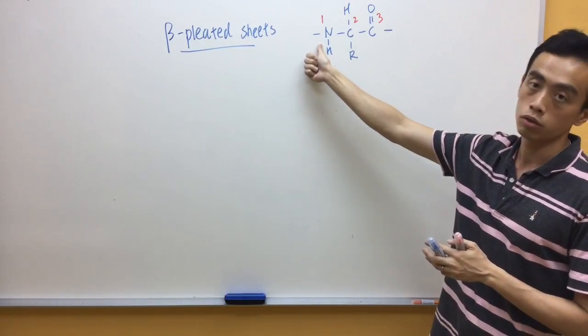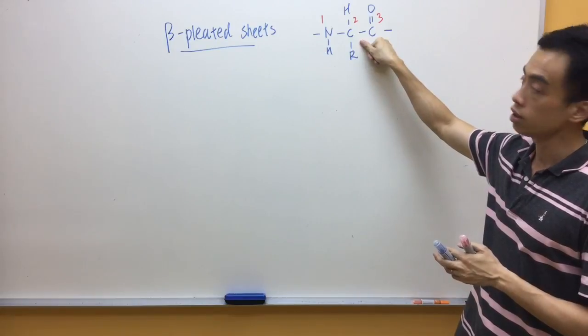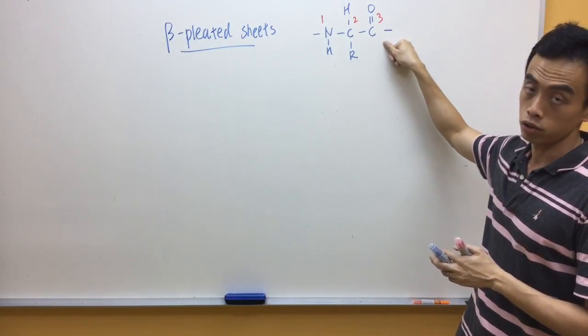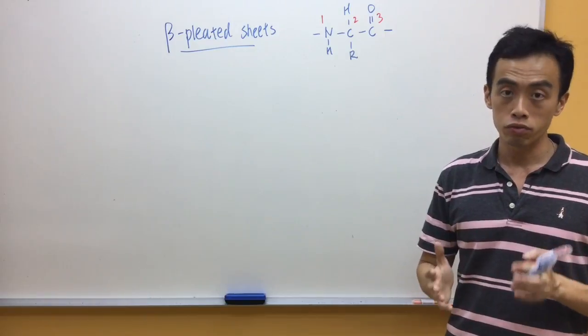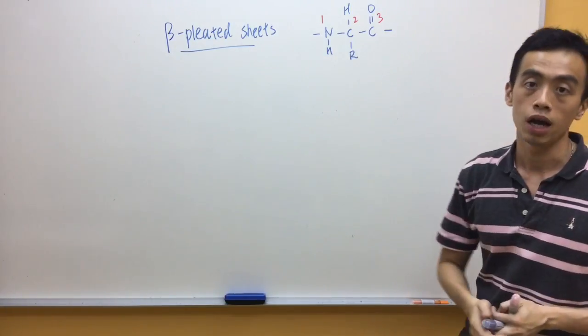So, position one will be my amine group. Position two will be my carbon with the R group and hydrogen. Position three will be my acid group. So, our primary structure will just be basically a repeat unit of my amine R group acid, amine R group acid.